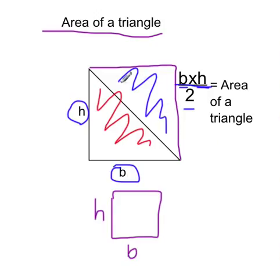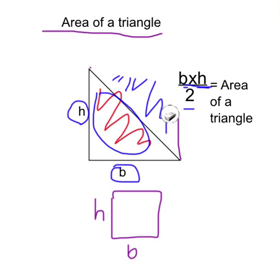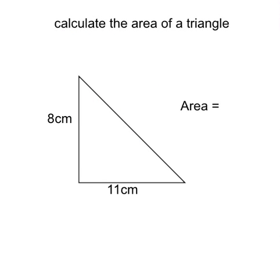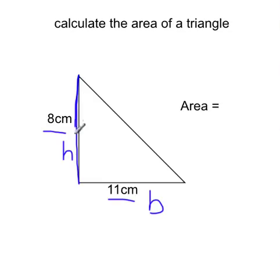Because two triangles equal one square, hence why we've got to divide by 2 — because we only want to find the area of one triangle, this red triangle here. We don't really care about the area of the blue one. So to find the area of a triangle, let's do a few example questions. Calculate the area of this triangle. We've got 8cm and 11cm. The base of the triangle is here and the height of the triangle is here. The height is how tall it is and the base is how long it is.